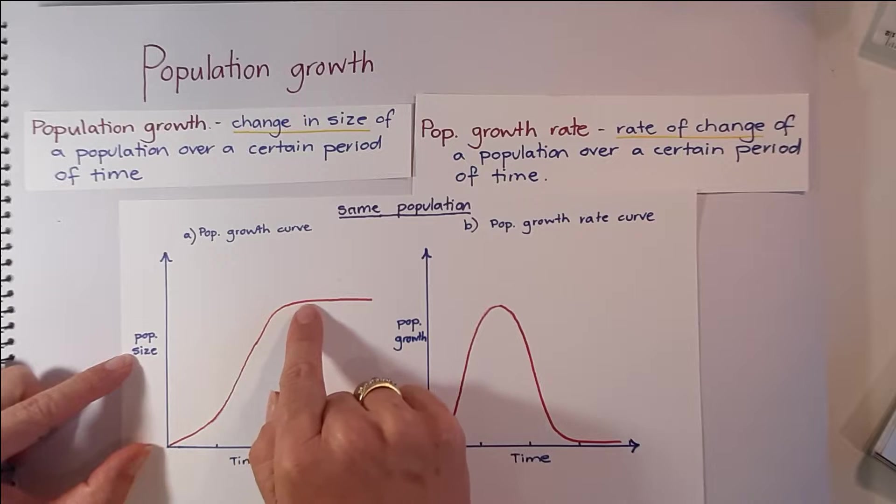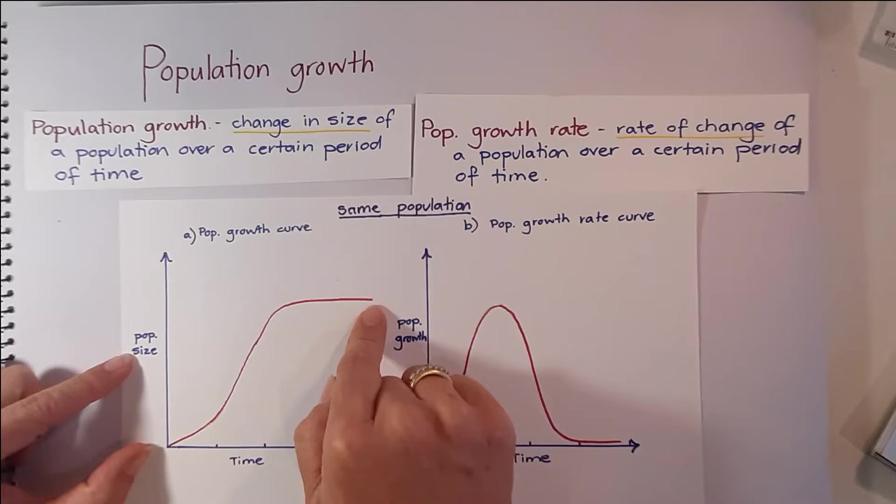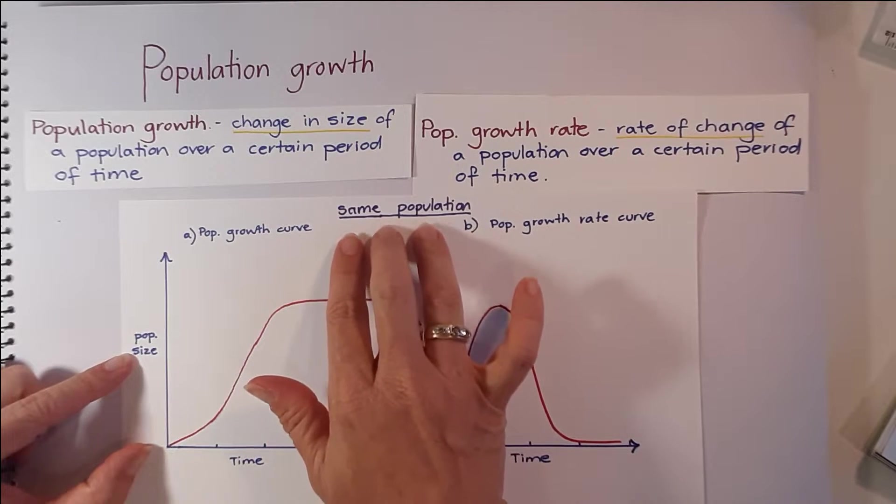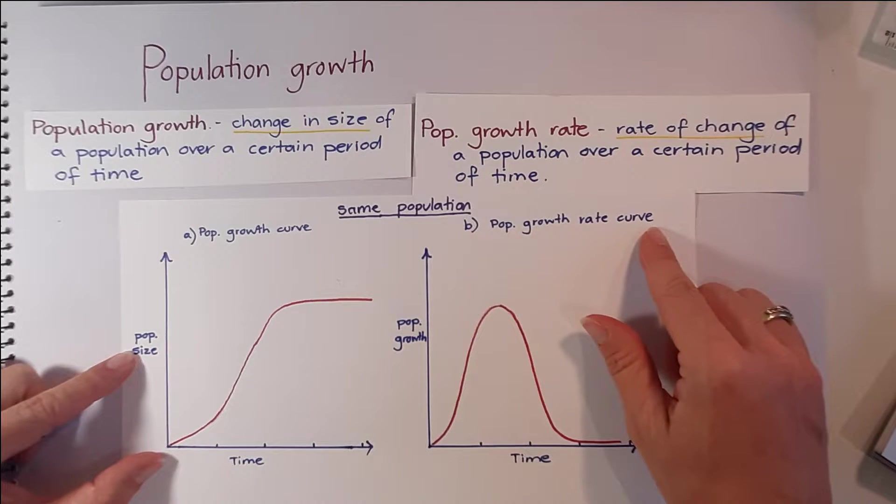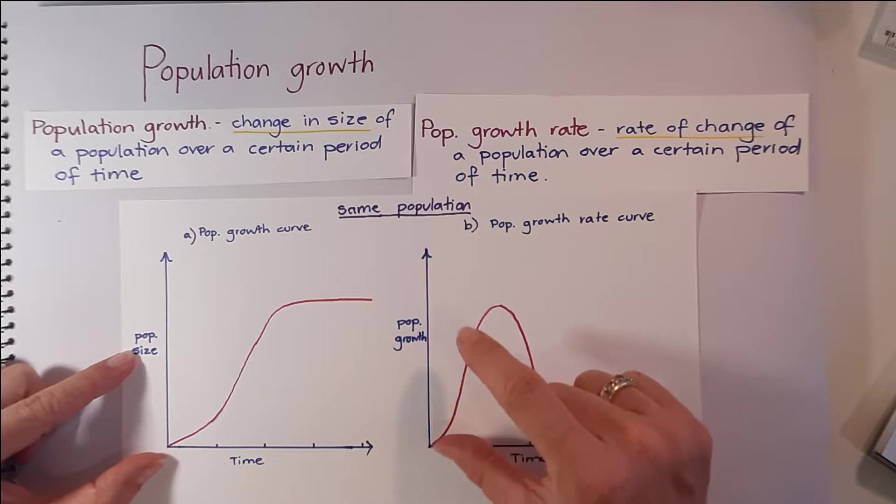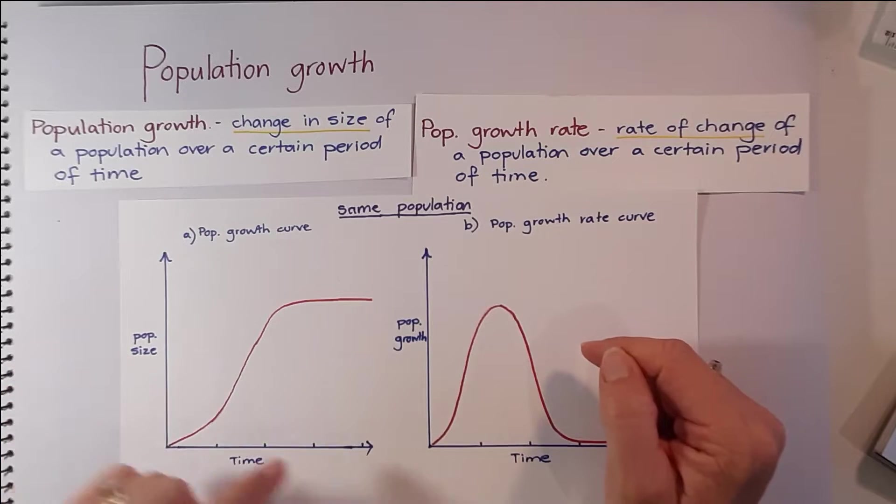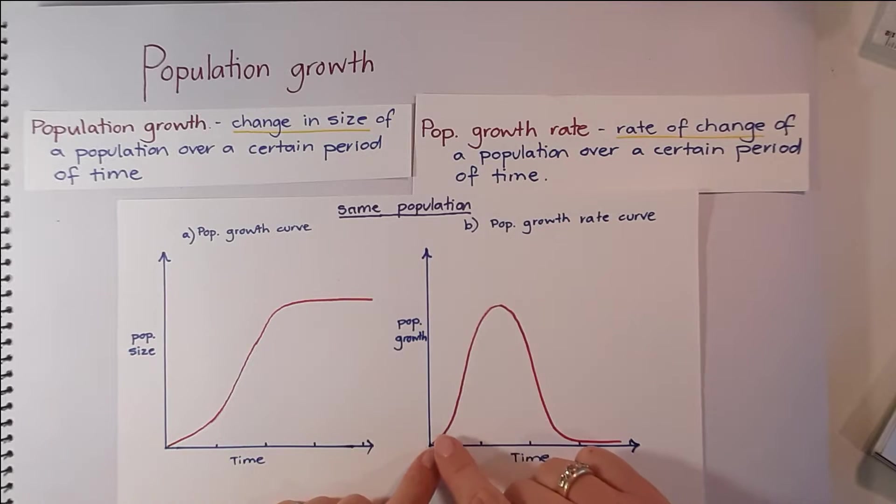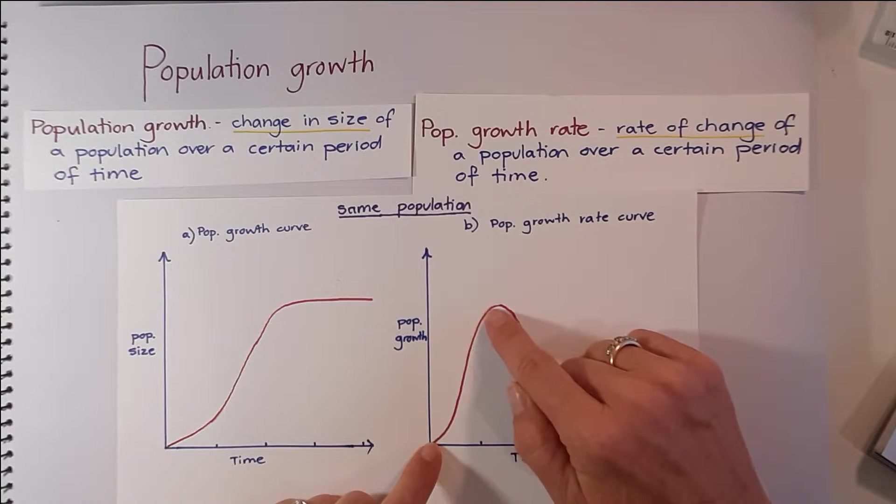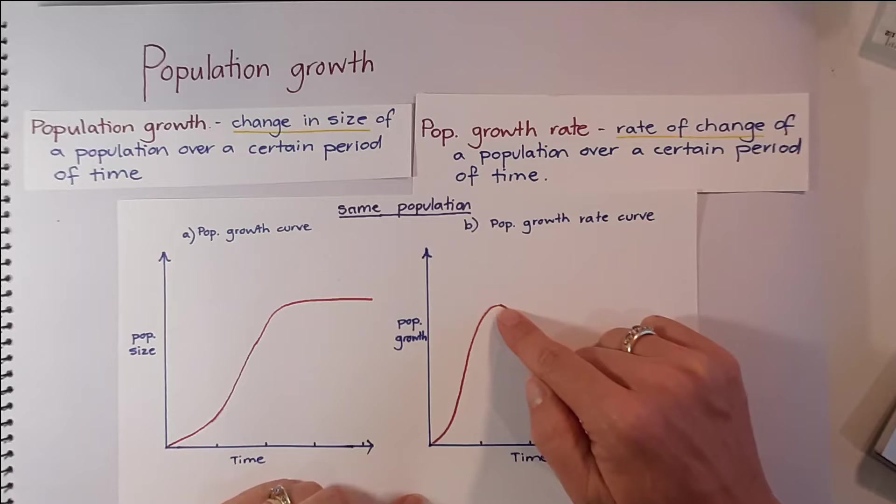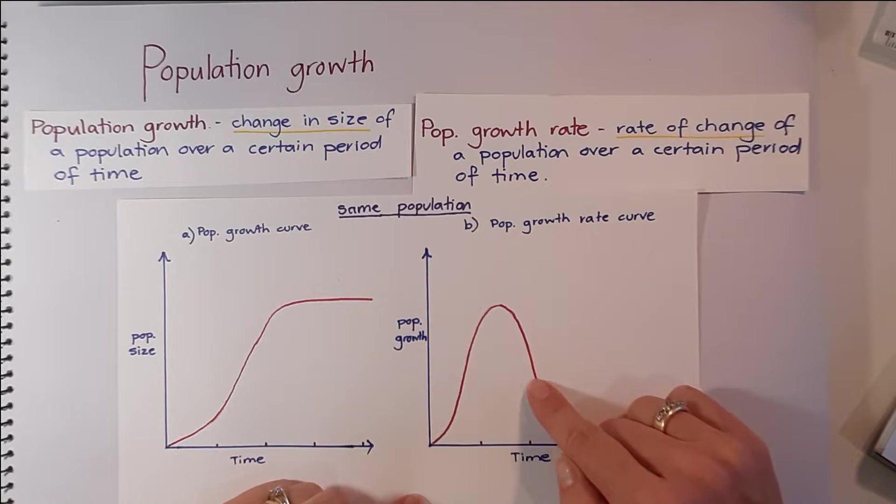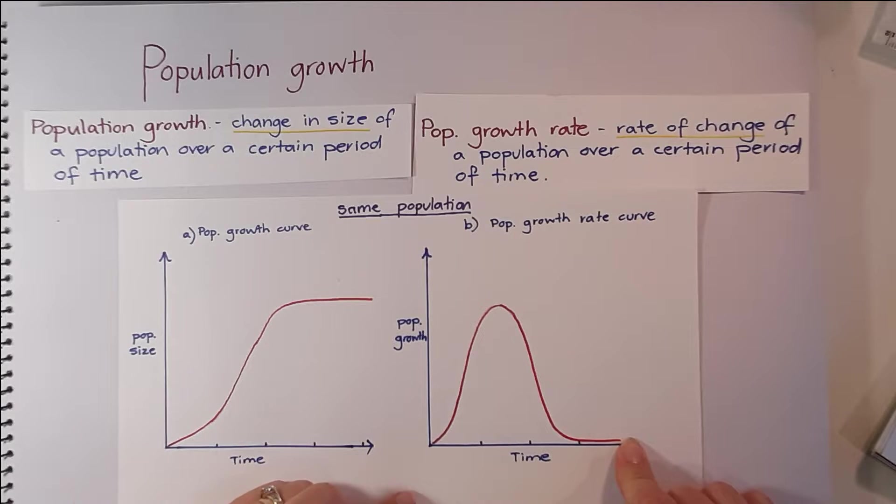If we took that same population and instead graphed the population growth rate curve, where we're showing how quickly or slowly that population is changing, this same population would look like this, where there is a quick increase in the population size, so where it hits a maximum point. And then as it starts to slow down and go back down to zero, where there is no more change in the population over time.